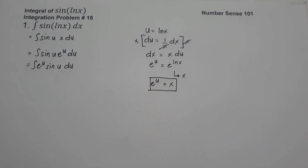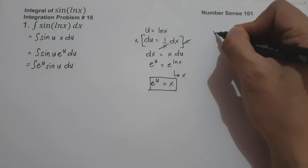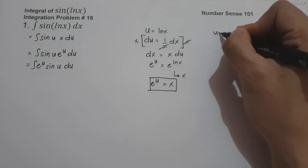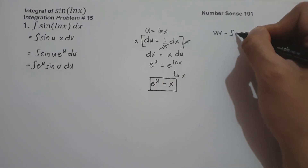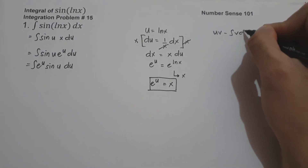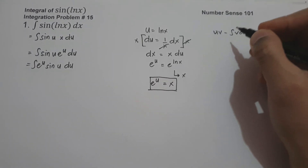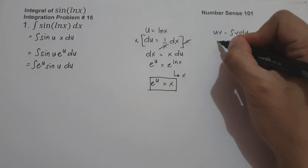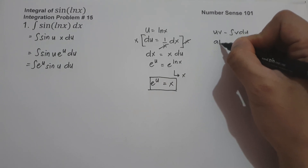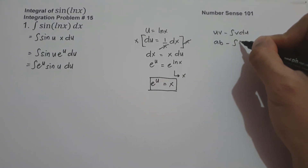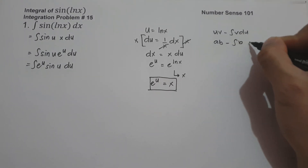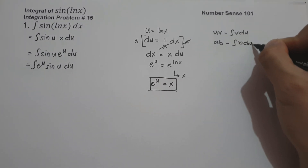So let us rewrite this as the anti-derivative of e raised to u sin(u) du, and then let us use integration by parts. Using the formula ab minus the anti-derivative of b da.